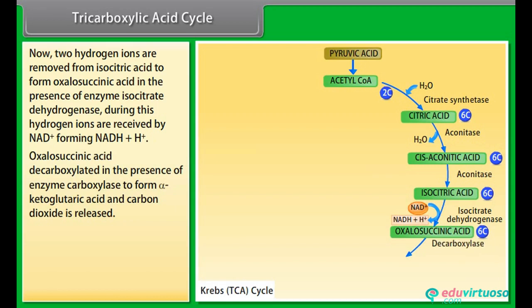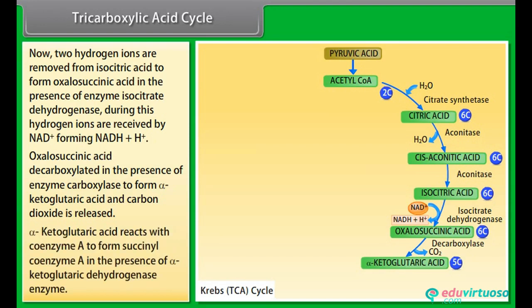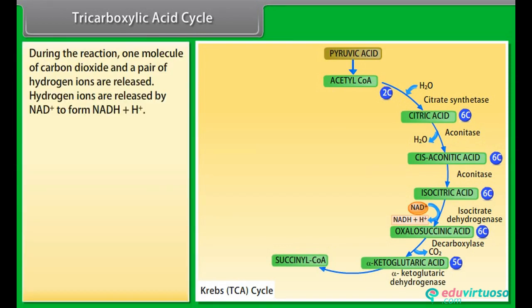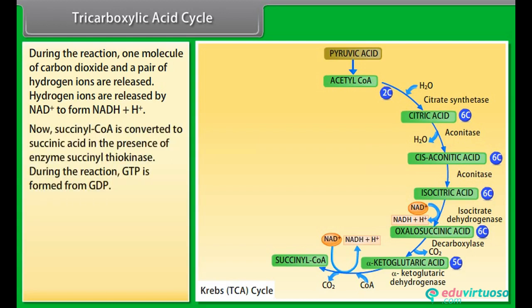Oxaloacetic acid is decarboxylated in the presence of enzyme carboxylase to form alpha-ketoglutaric acid and carbon dioxide is released. Alpha-ketoglutaric acid reacts with coenzyme A to form succinyl coenzyme A in the presence of alpha-ketoglutaric dehydrogenase enzyme. During the reaction, one molecule of carbon dioxide and a pair of hydrogen ions are released. Hydrogen ions reduce NAD⁺ to form NADH+H⁺. Succinyl CoA is converted to succinic acid in the presence of enzyme succinyl thiokinase. During the reaction, GTP is formed from GDP.